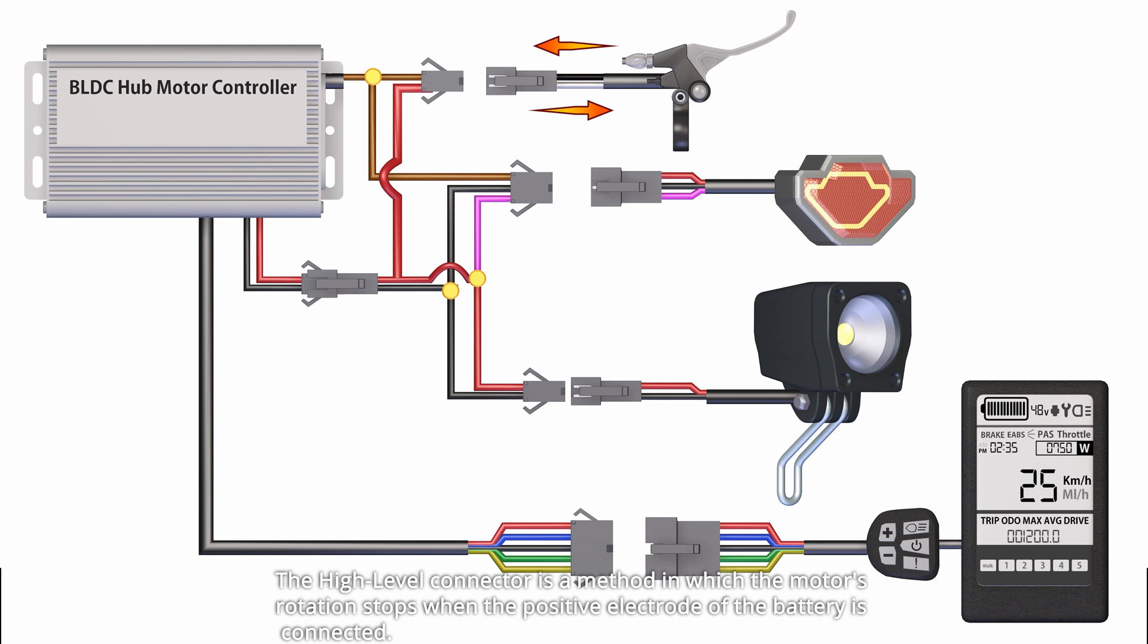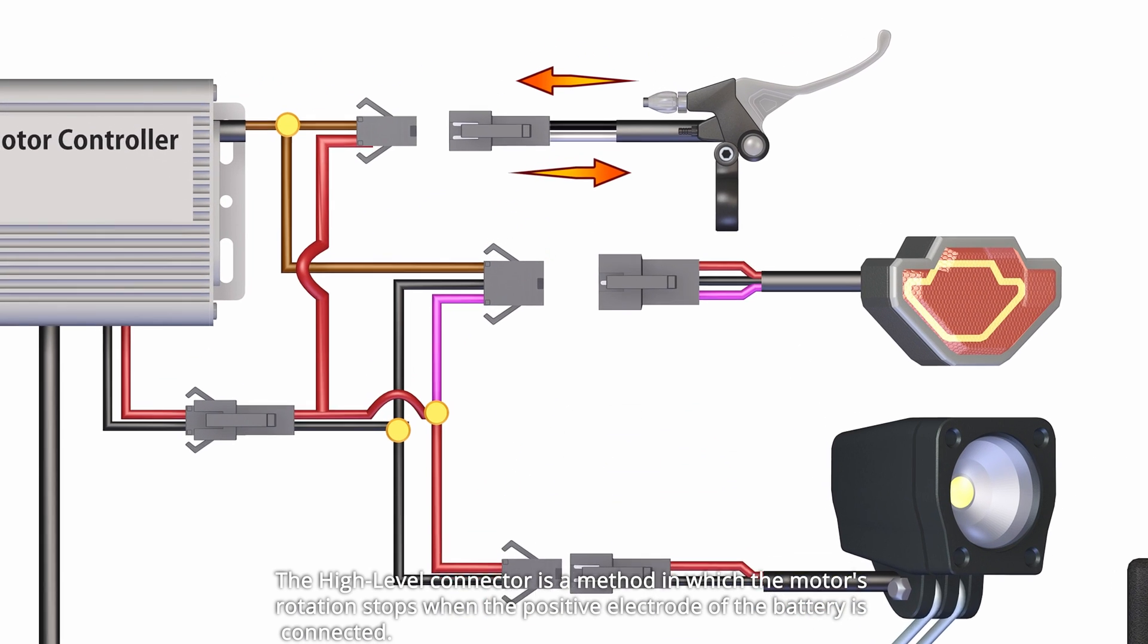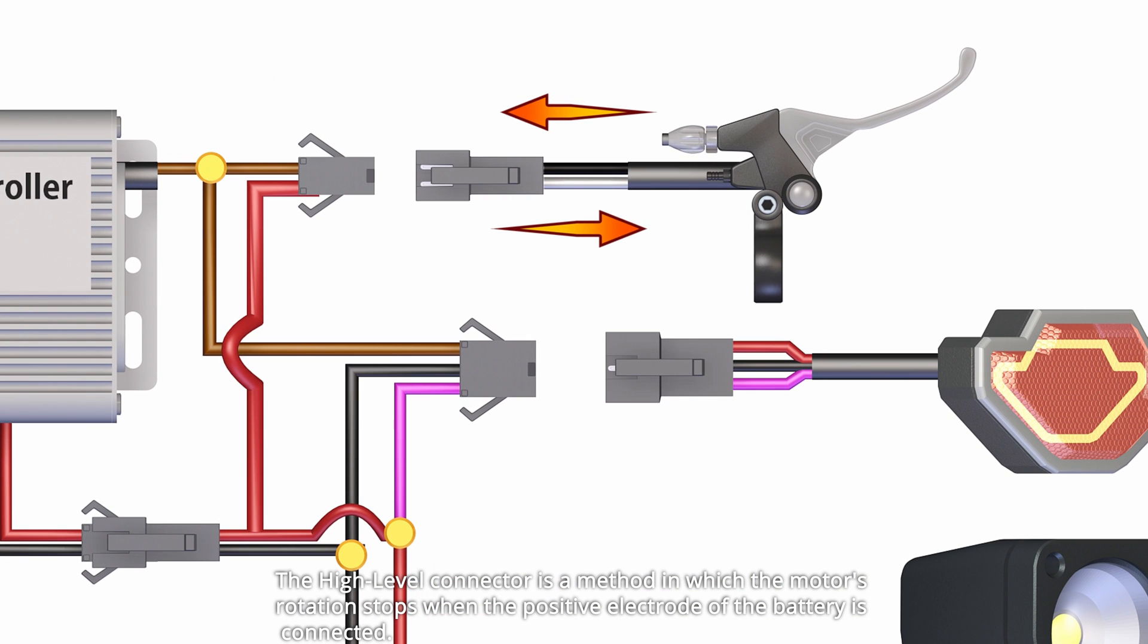The high-level connector is a method in which the motor's rotation stops when the positive electrode of the battery is connected.